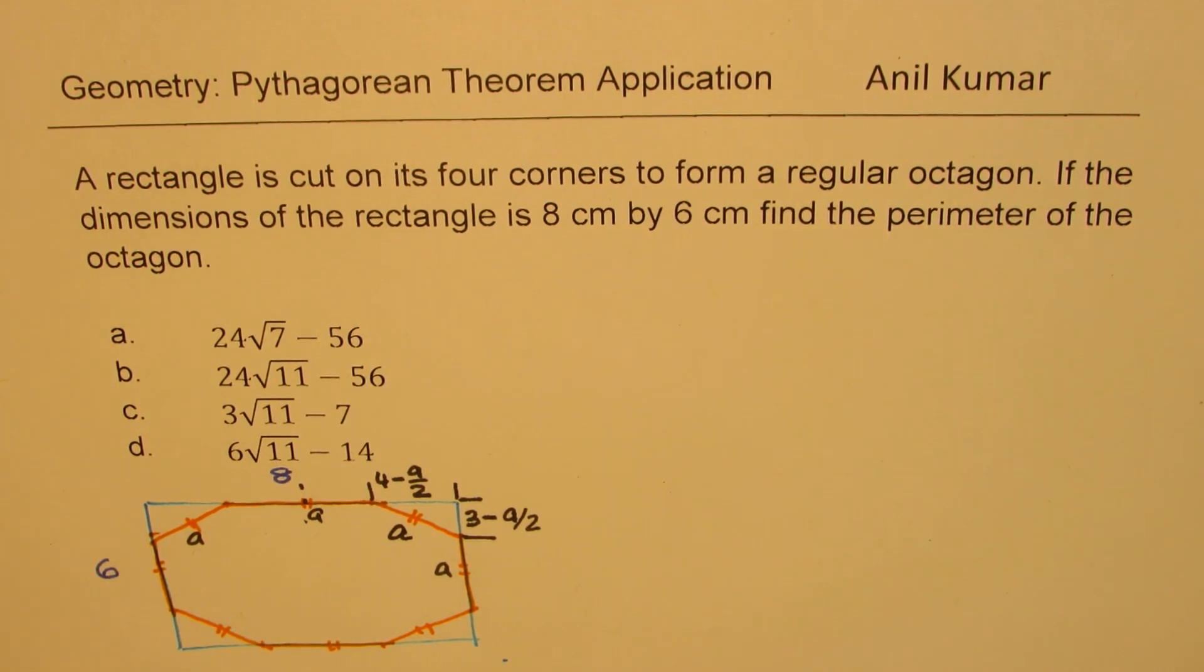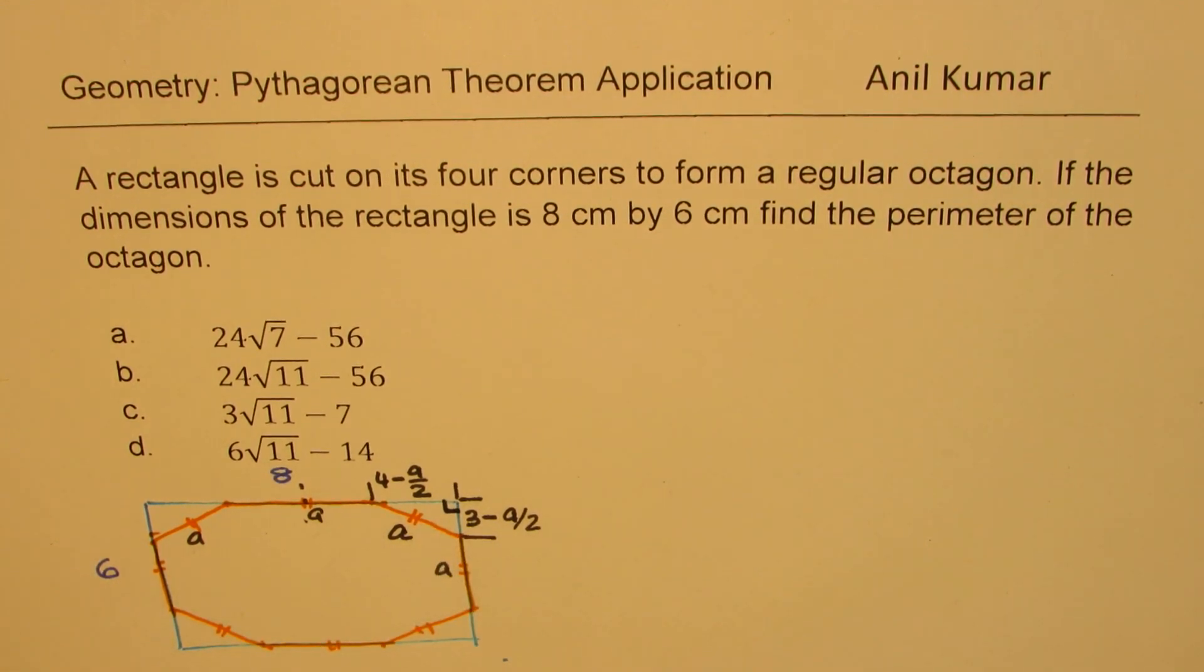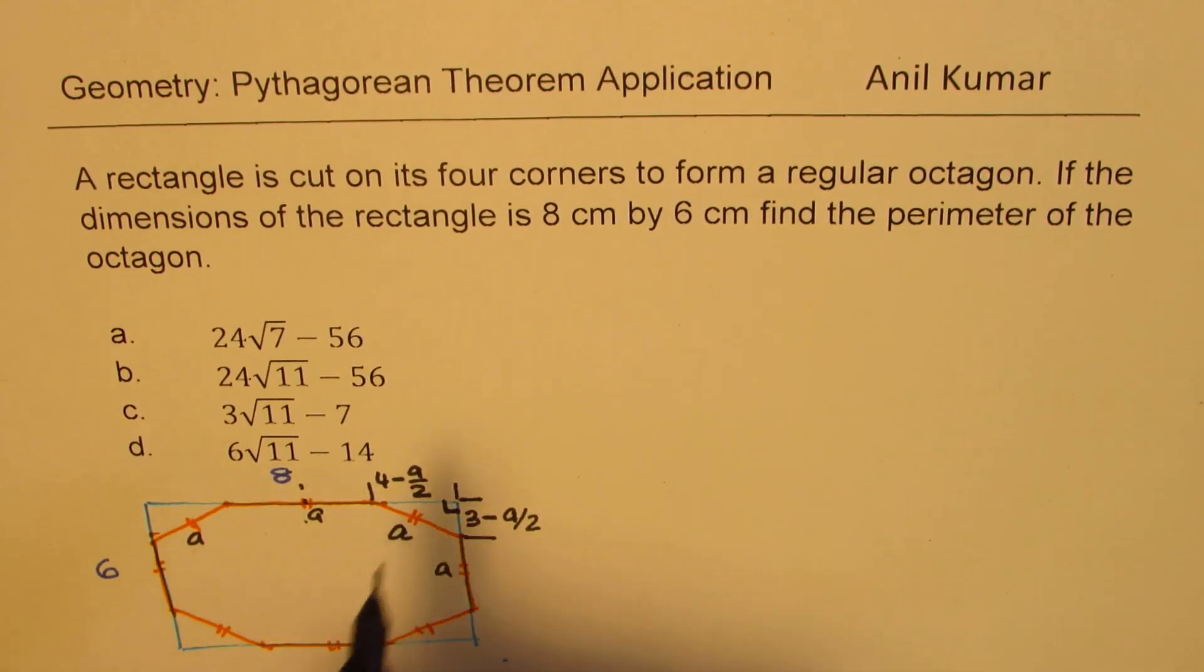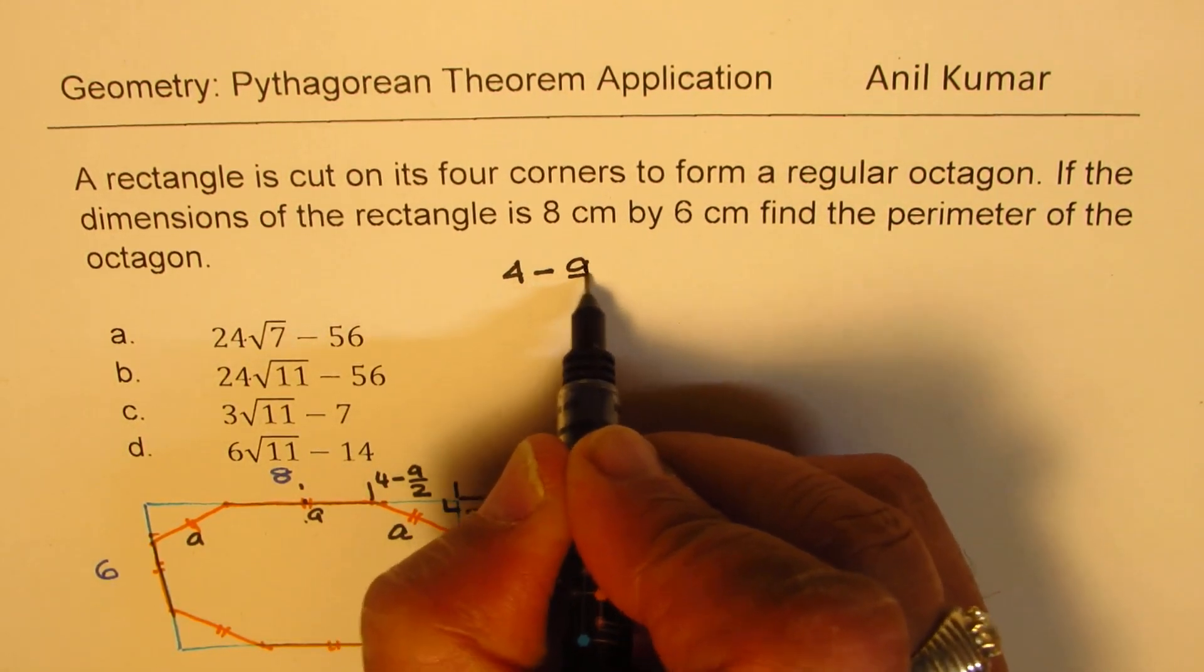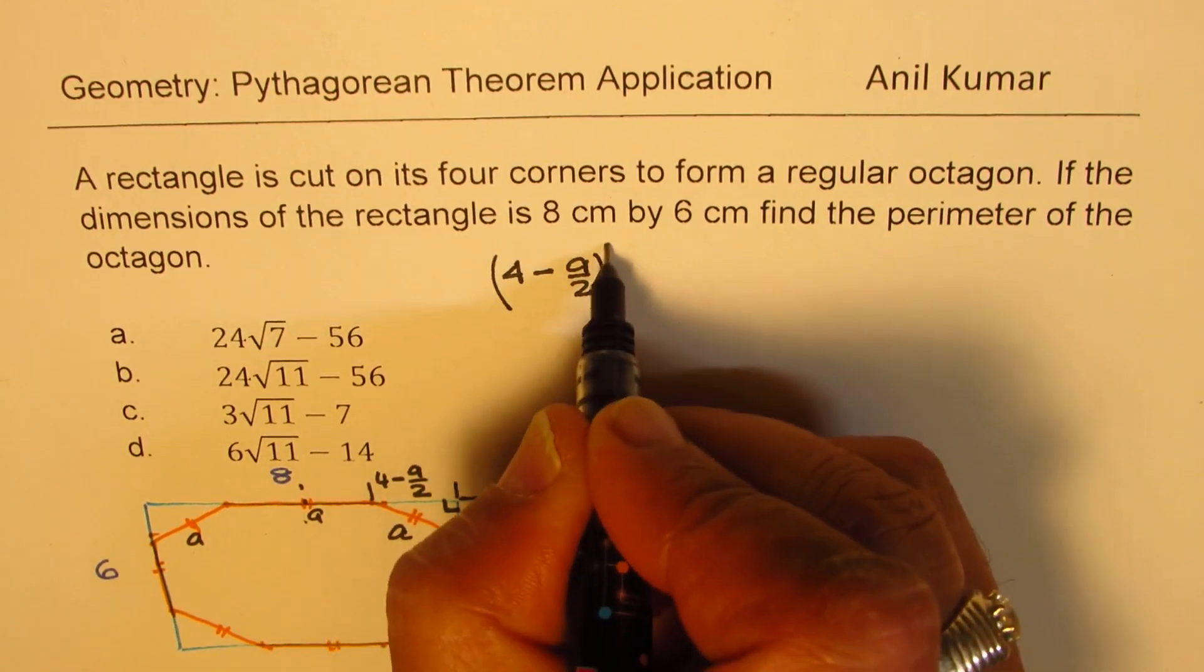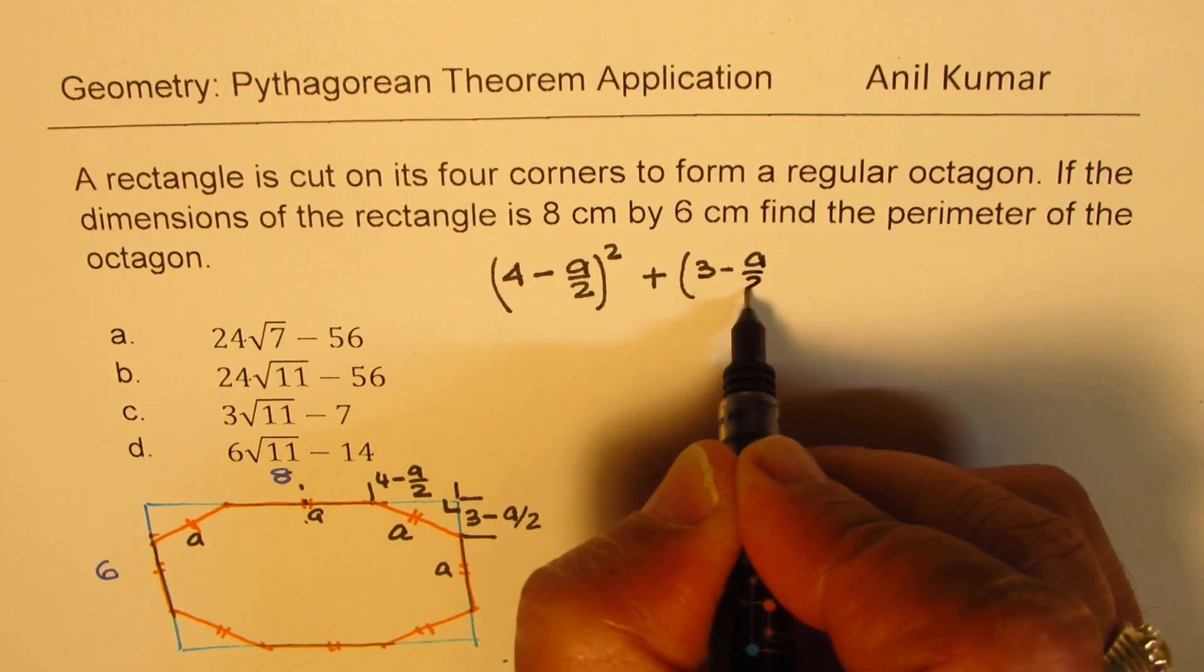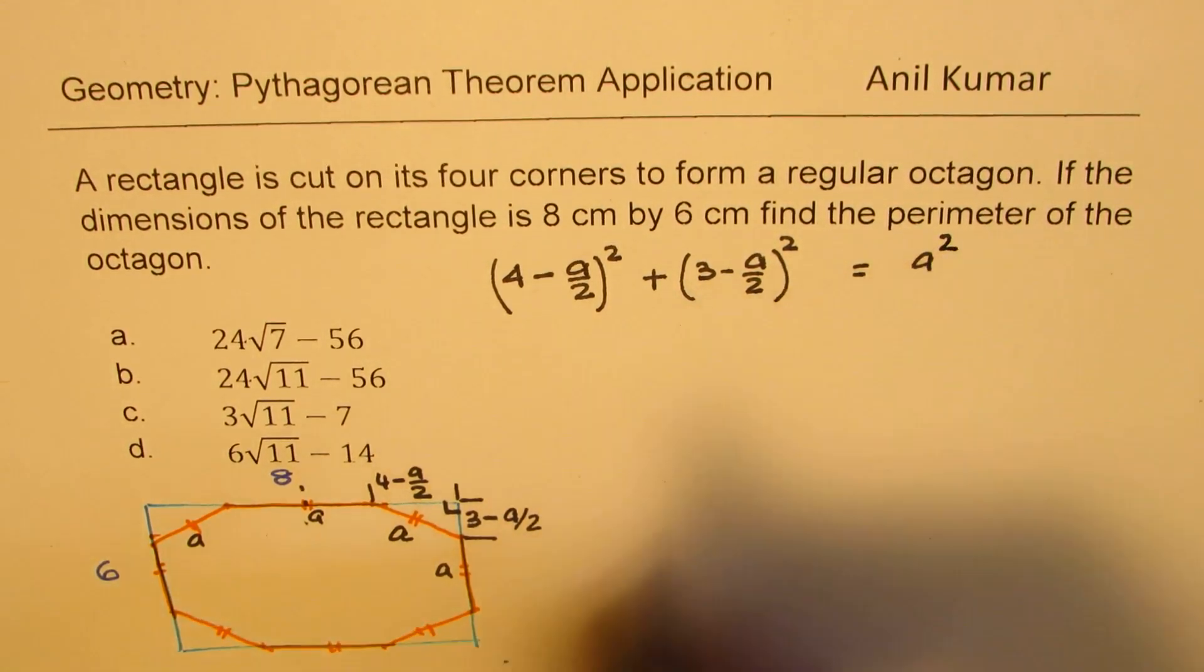So using Pythagorean theorem, we can actually solve this particular question. So every corner is a right triangle. So what we get here is square of these two, sum of square of these two should be A square. So we get our equation: 4 minus A over 2 whole square plus 3 minus A over 2 whole square should be equal to A square.